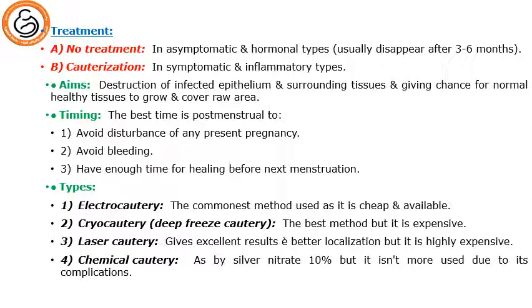We can do cauterization in symptomatic and inflammatory types. The aim of cauterization is to destroy the infected epithelium and surrounding tissue and to give a chance for healthy tissue to grow and recover these raw areas. The best time for cauterization is post-menstrual — to avoid disturbance of any present pregnancy, to avoid bleeding, and to give enough time for healing before the next menstruation.